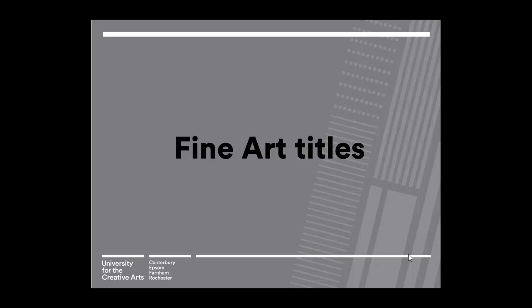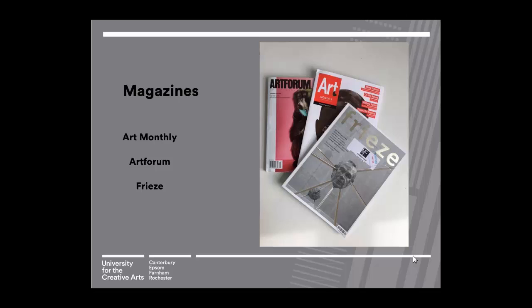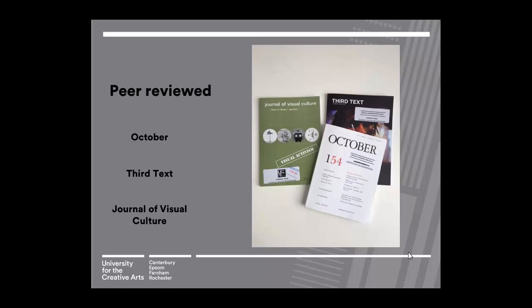I am now going to run through some of the titles recommended by the tutors on your course. We have several fine art magazines such as Art Monthly, Art Forum, and Frieze. These are up to date with reviews of current exhibitions, feature interviews with artists, and have articles on aspects of art. We also have peer reviewed titles such as October, Third Text, and the Journal of Visual Culture, which feature critical essays that have been scrutinised by other writers from the fine art community. These are particularly useful for finding arguments for your essays.